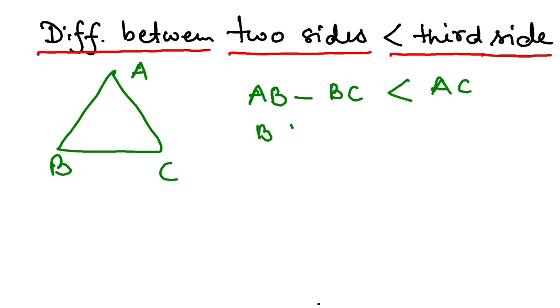Similarly, if I take BC minus AC, that must be less than AB. And if I take AB minus AC, that should be less than BC. All three conditions must be held true, not one or two of them—all of them must be held true.